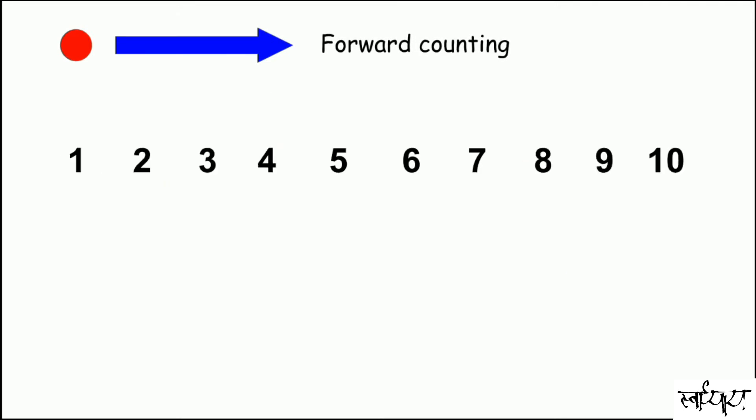When we do forward counting, we get to know what's next. In other words, after. What comes after one? Two. What comes after two? Three. What comes after six? Seven. Let's see a few more examples.